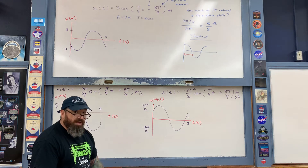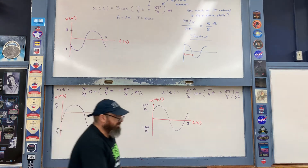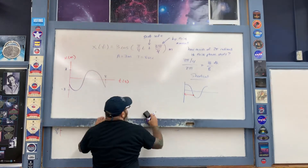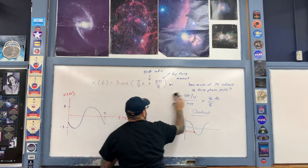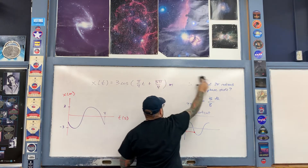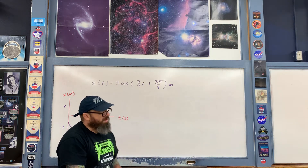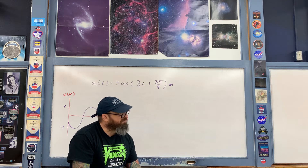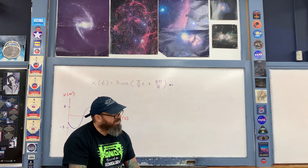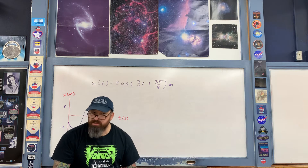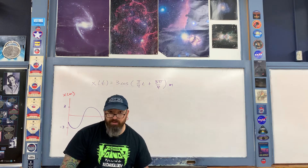Now let's get to the remainder of the problem, which is similar to examples we've already seen. The question asks: when is the oscillator at a position of x = positive 2 meters? Then find the velocities and accelerations at those times, and mark the times on all three graphs. This process is a little more involved than earlier examples without a phase shift.